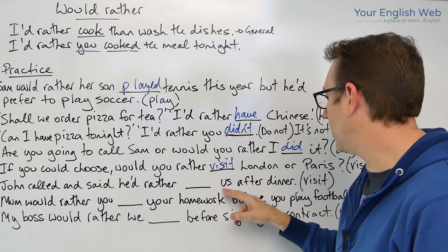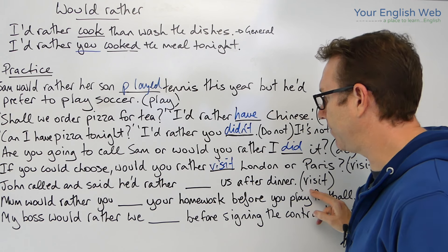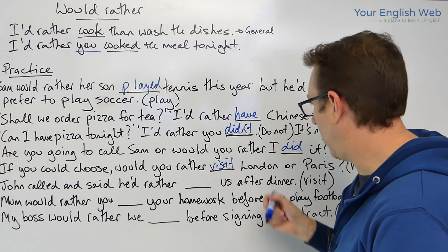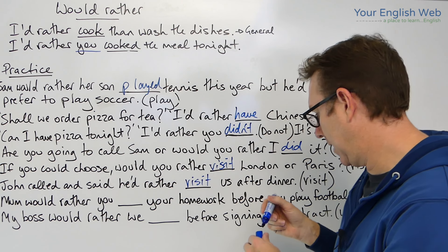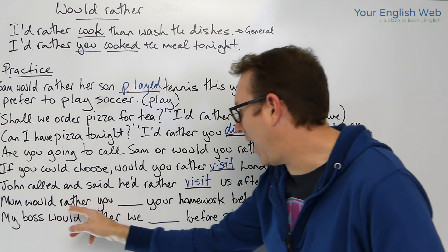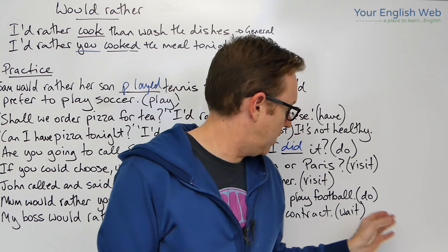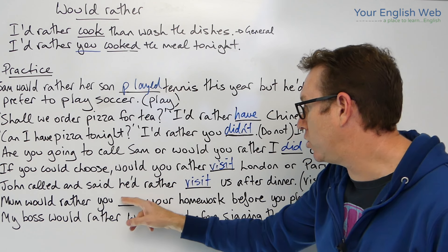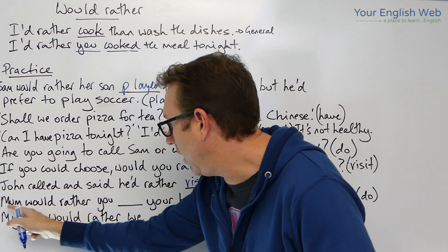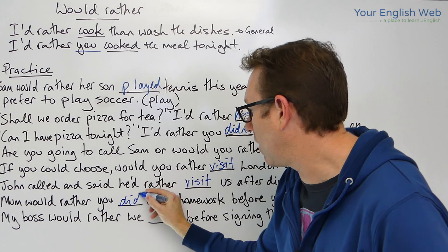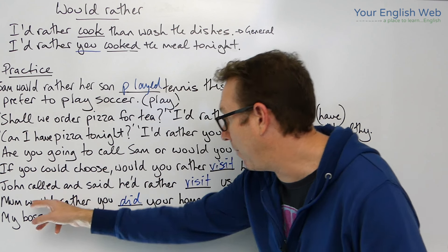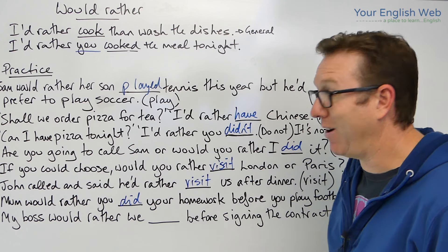'John called London and said he'd rather [visit] us after dinner.' Is anybody else involved? No — so 'he'd rather visit us after dinner,' using the infinitive. Next: 'Mum would rather you [do/did] your homework before you play football.' Here we are involving someone — 'you' is the second subject — so: 'Mum would rather you did your homework before you play football.'